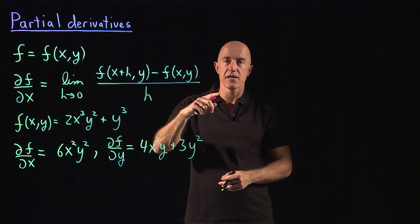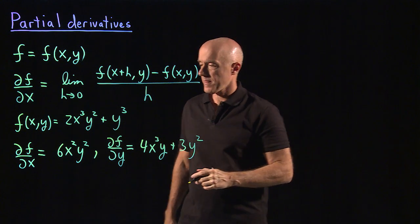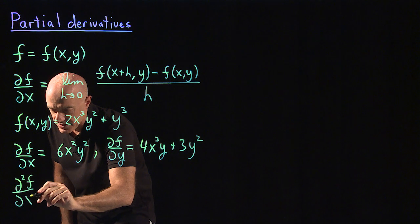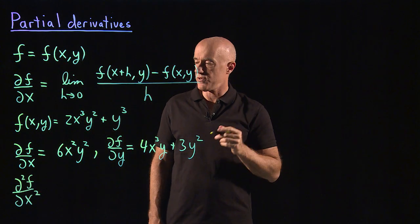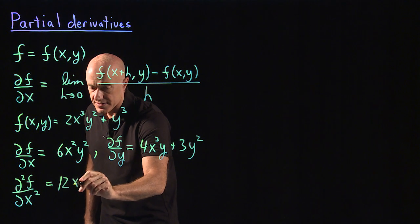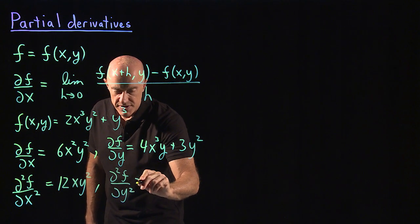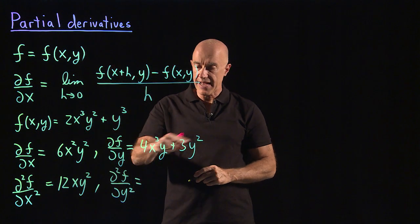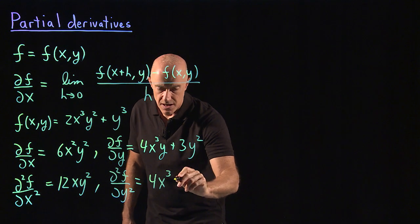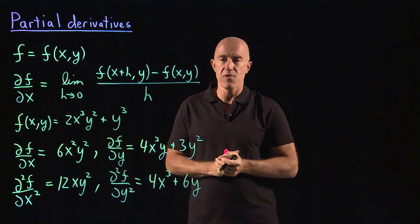Those are the two first derivatives. We can also do higher order derivatives for partial derivatives. Let's look at the second derivative of f with respect to x squared — partial squared f with respect to x squared. We differentiate with respect to x again, keeping y fixed. That will be 12xy². And the partial squared f with respect to y squared — we differentiate f again keeping x fixed — that will be 4x³ plus 6y. That's the idea of taking partial derivatives.